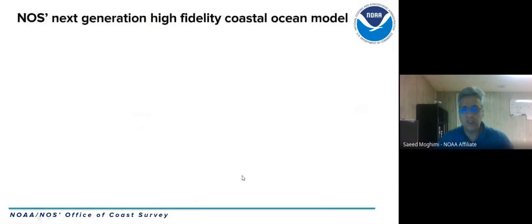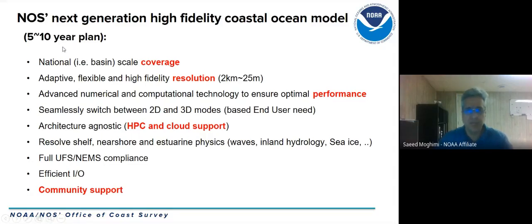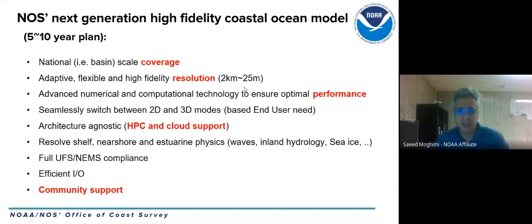Here is the outlook for the next-generation high-fidelity coastal ocean model — more of a wish list for five to ten years. First, we want to move from domain-by-domain coverage to national or basin-scale coverage. Based on the application, we may need resolutions of perhaps 25 meters, specifically to resolve navigation channels or narrow hydraulic connections, requiring adaptive, flexible, high-fidelity modeling.